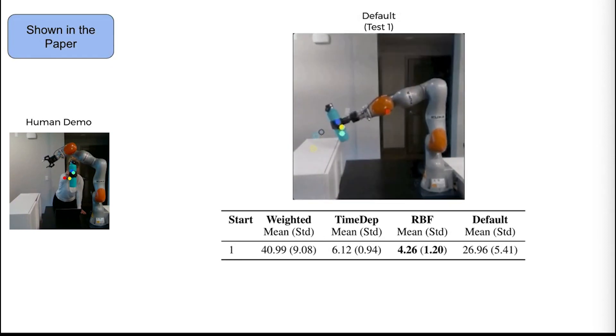The default cost results in the object somewhat colliding with the edge of the shelf in an attempt to take the shortest path to the goal. This is in contrast to the learned costs, which presumably take cues from the demonstration.